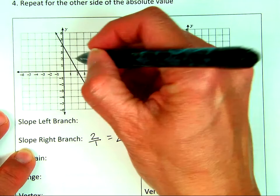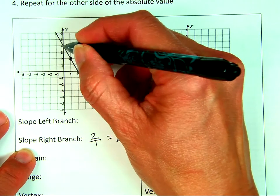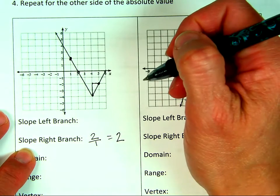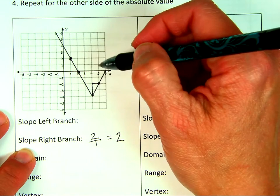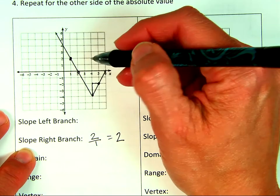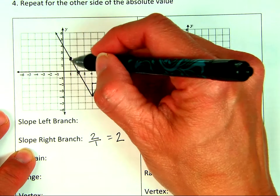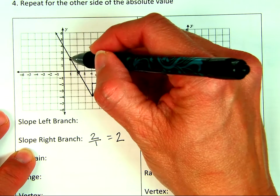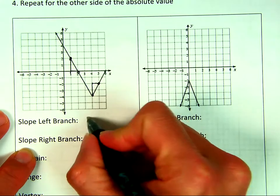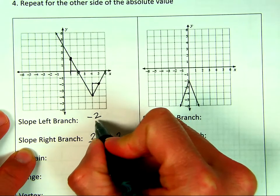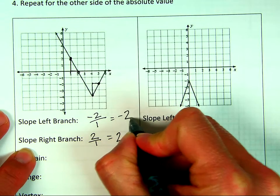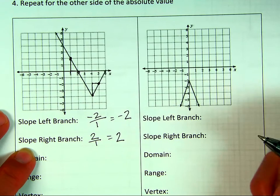It doesn't matter which two points you pick — it's going to be the same because it's a line, and a line always has a constant rate of change. Rate of change is another name for slope. On the left side, I go down two, right one. Down is negative, so the slope of that side is negative two.